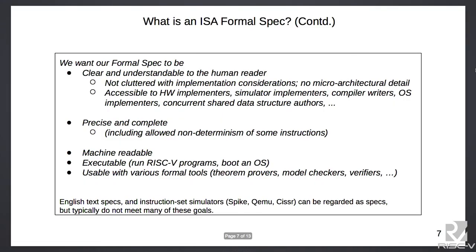A very high priority for us is that the formal spec needs to be accessible. It shouldn't be written in some exotic notation that only people armed with PhDs can read. We really want it to be accessible to compiler writers, who should be able to use it as a reference to understand precisely what each instruction does, and to architects designing implementations. Precision and completeness are also key. We also have to deal with non-determinism, particularly when dealing with weak memory models, and we need to define an envelope of what non-deterministic outcomes are allowed.